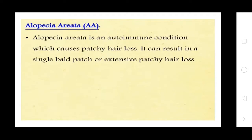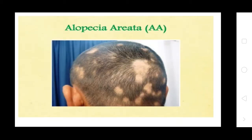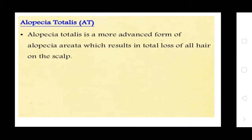Alopecia Areata is an autoimmune condition which causes patchy hair loss. It can result in a single bald patch or extensive patchy hair loss. Alopecia Totalis is a more advanced form of alopecia areata which results in total loss of hair on the scalp.